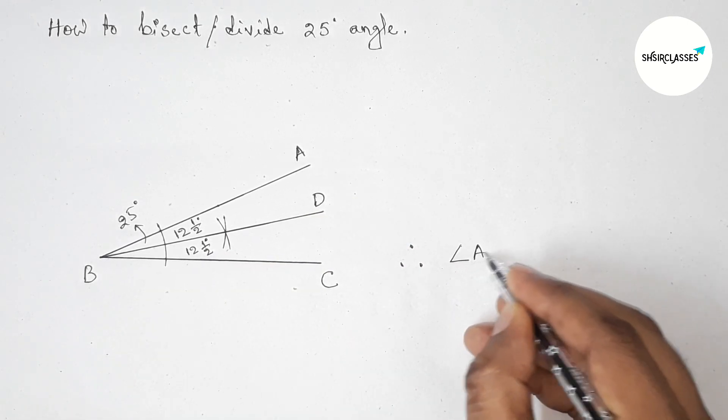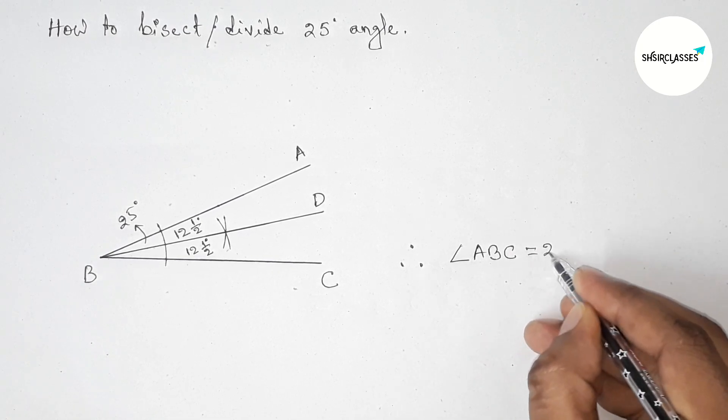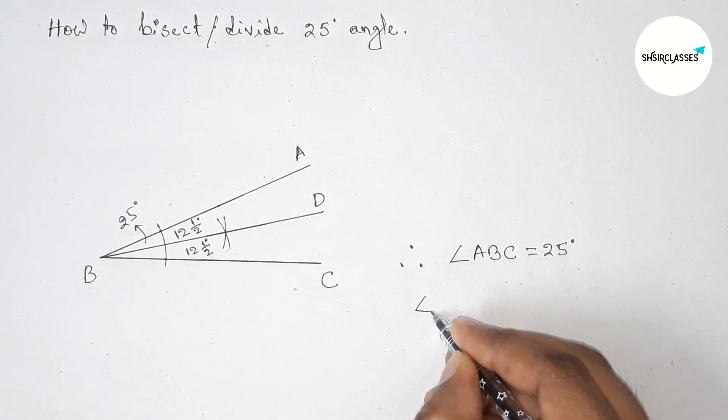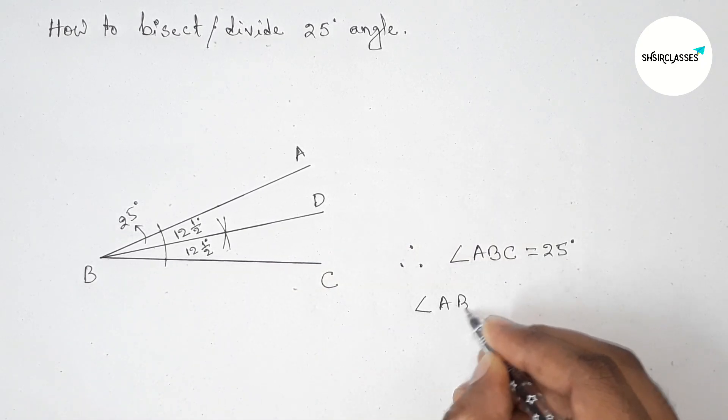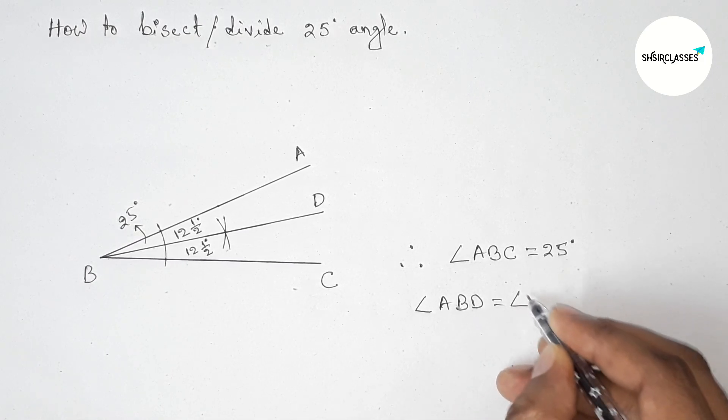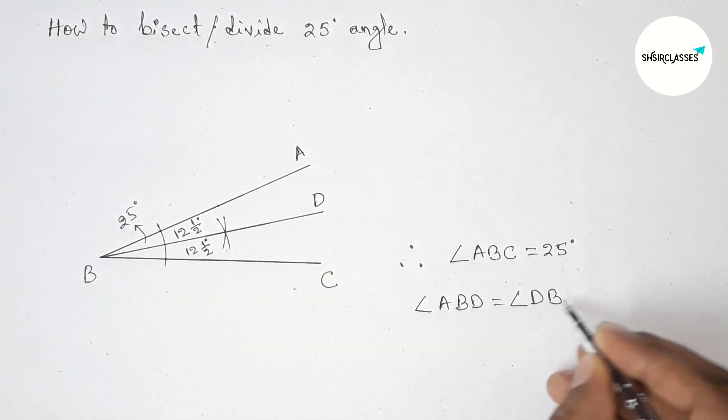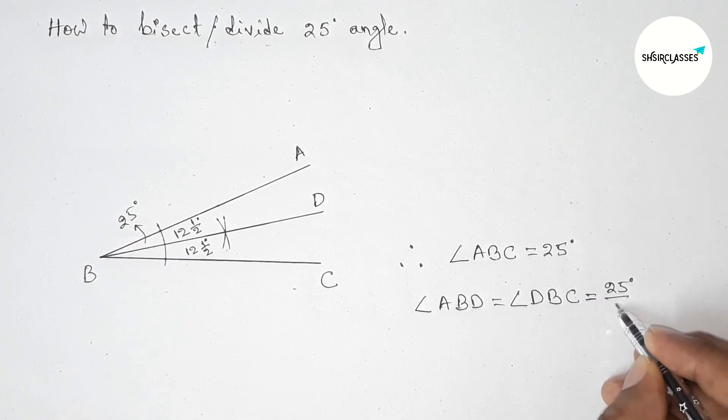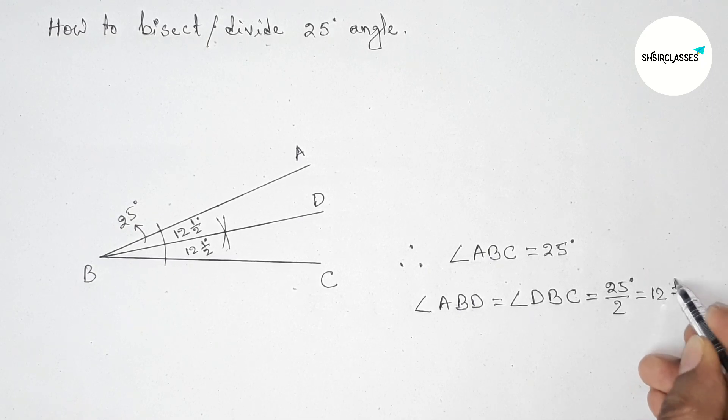So therefore, here angle ABC, that is 25 degrees, and the value of angle ABD, that is equal to angle DBC. So both the angles are equal: 25 degrees by 2, so this is obviously 12.5 degrees.